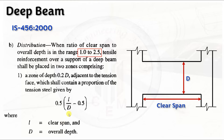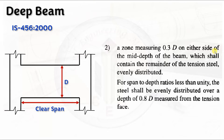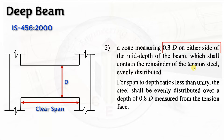Zone 2 is measured as 0.3d on either side of the mid-depth of the beam, which shall contain the remainder of the tension steel, evenly distributed. So Zone 1 uses the formula 0.5 × (l/d − 0.5) × Ast from the tension face to 0.2d depth, and the remainder goes into Zone 2 spanning 0.3d on each side of mid-depth. For span-to-depth ratio less than unity, the steel shall be evenly distributed over a depth of 0.8d measured from the tension face.